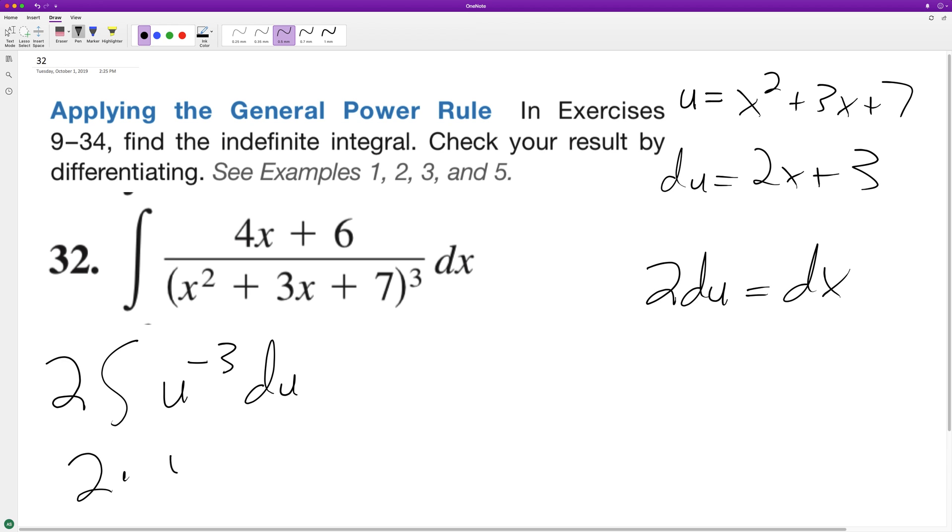Two times u raised to negative three plus one over negative three plus one plus c. So we end up with two divided by negative two, because this negative three plus one is negative two. So this ends up being negative one times u raised to negative two plus c.